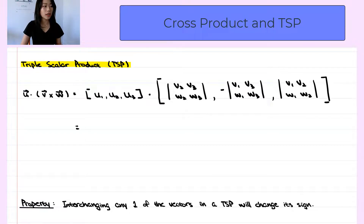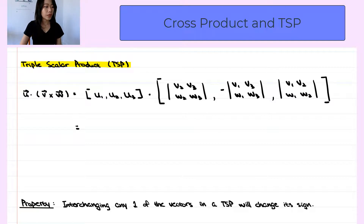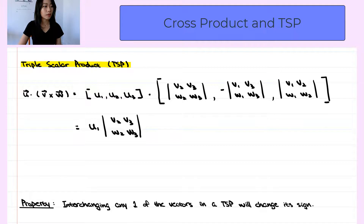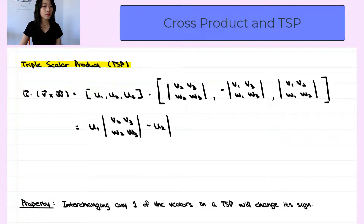The dot product is the sum of the product of each component. So u1, u2, and u3 dot with the cross product — it will be u1 times the first component of the cross product, determinant of v2, v3, w2, and w3, then plus u2 times the second component from the cross product, that would be minus u2 times the determinant.